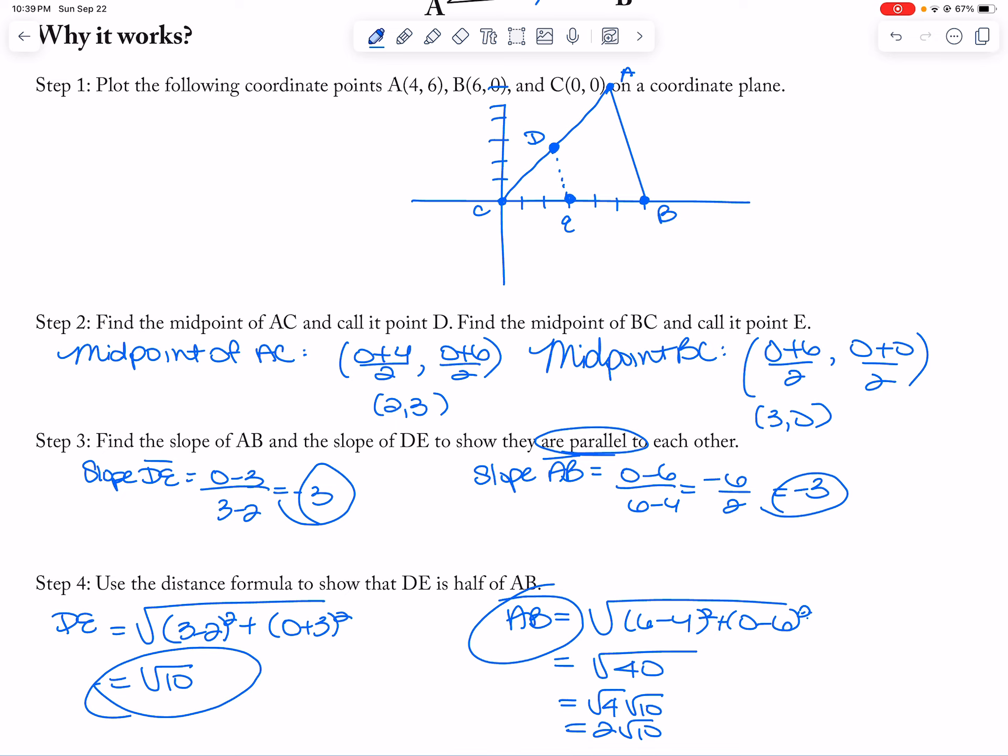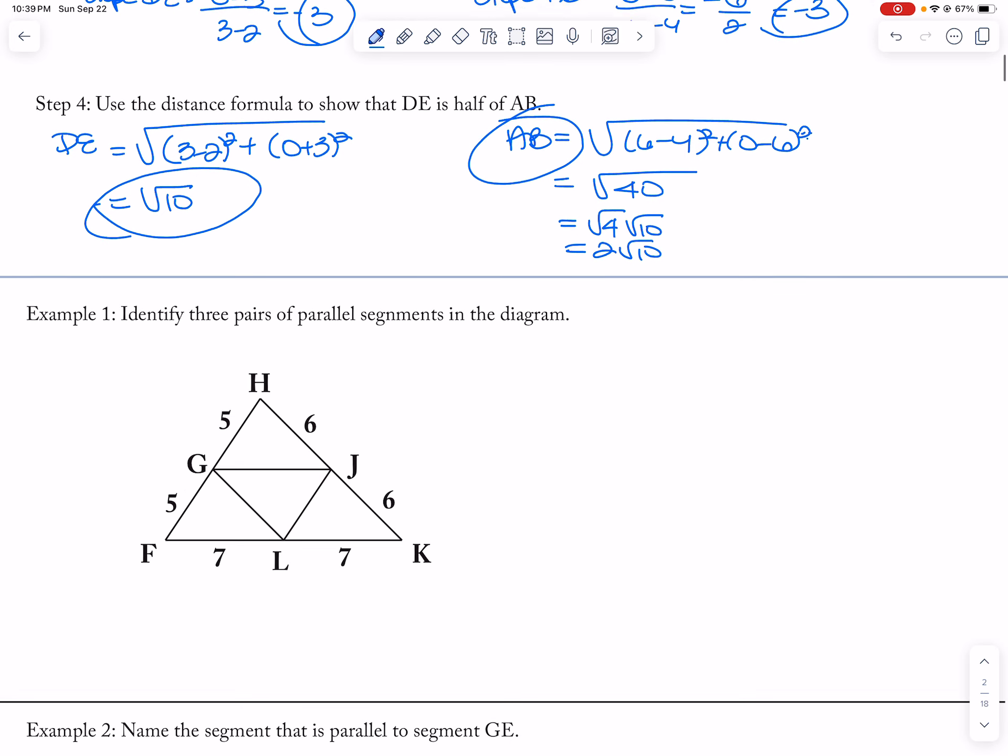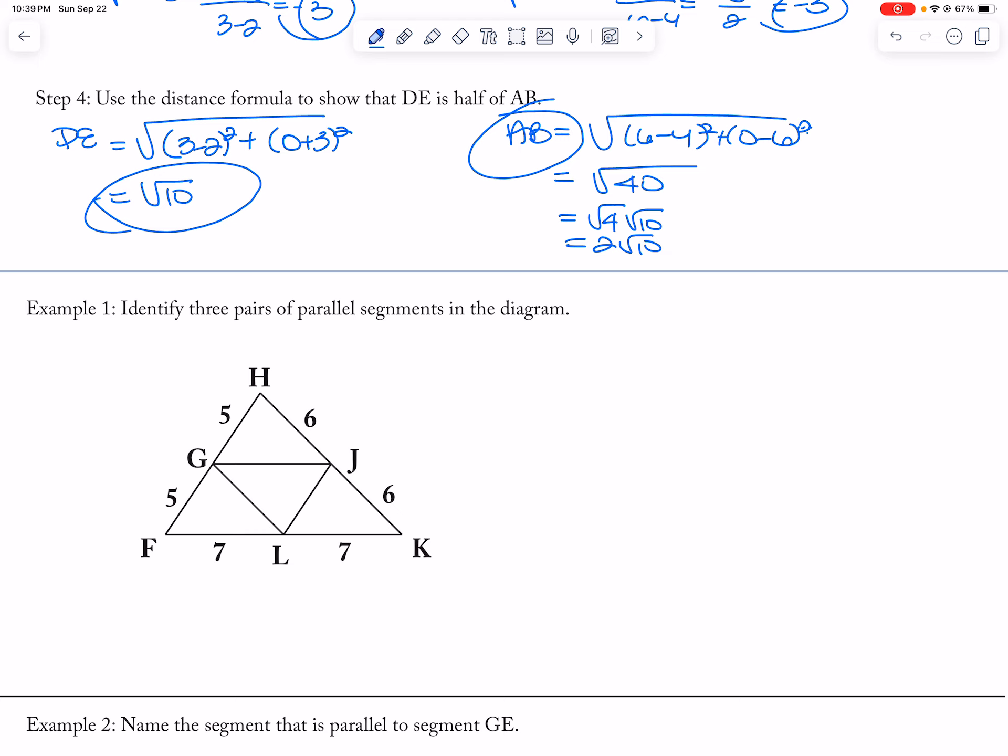Okay. Now, I want to identify three pairs of parallel line segments. So I get H to F and J to L. And then I also get H to K and G to L, and then I get another one of F to K and G to J.